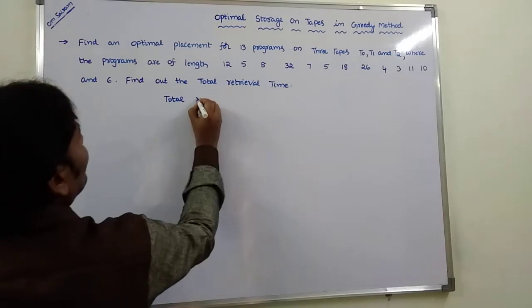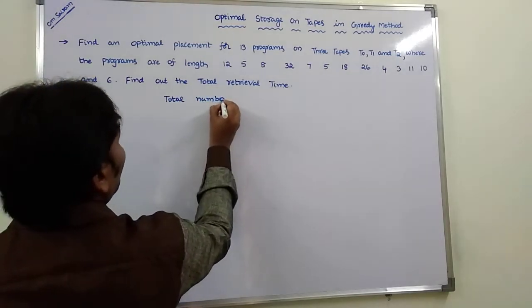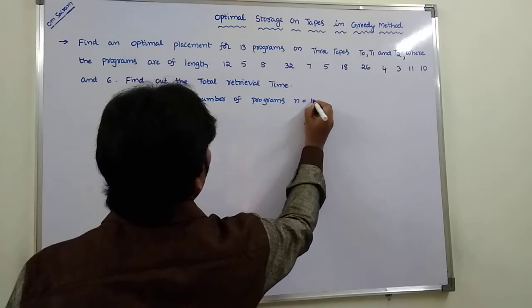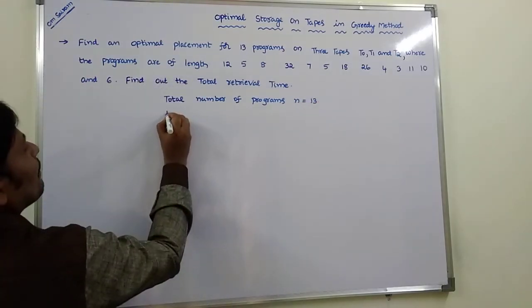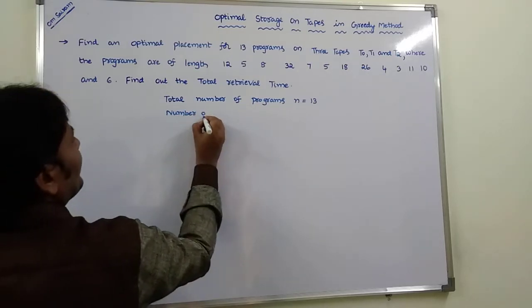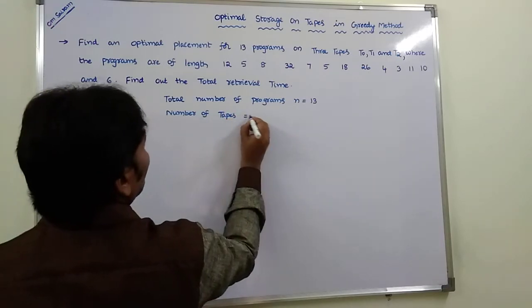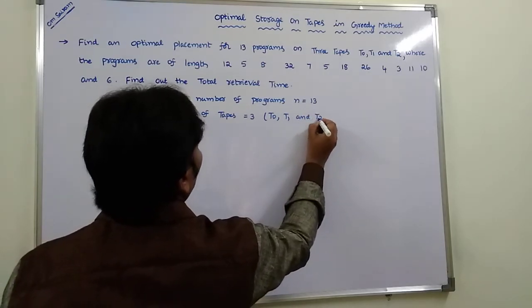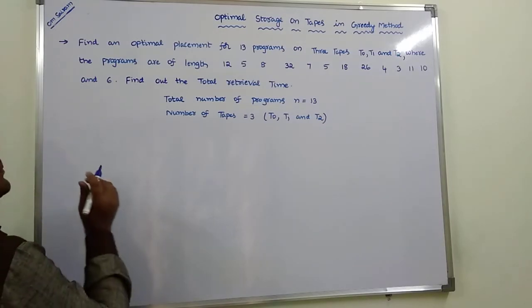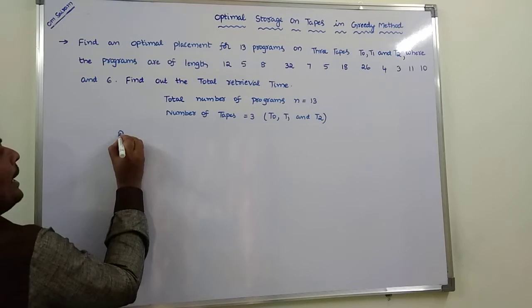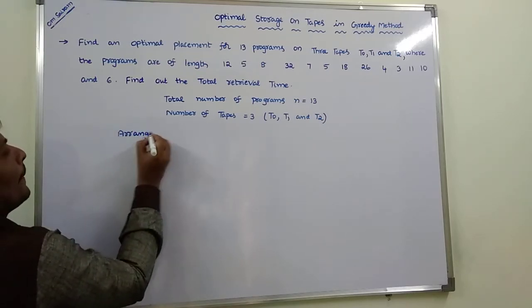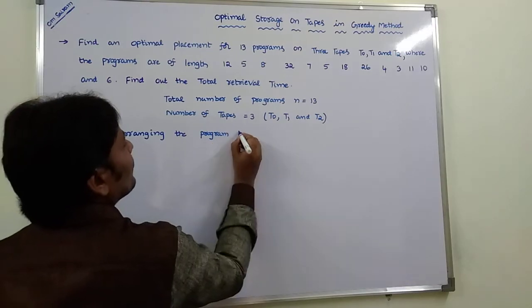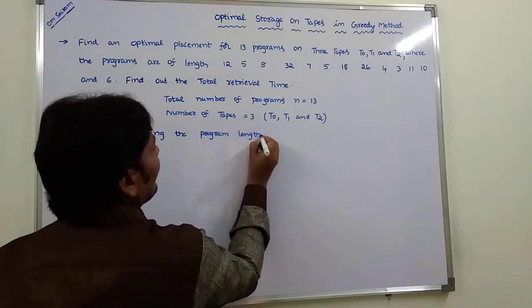The total number of programs is n equals 13, and the number of tapes is 3, that is T0, T1, and T2. The first step is arranging the program lengths in increasing order.